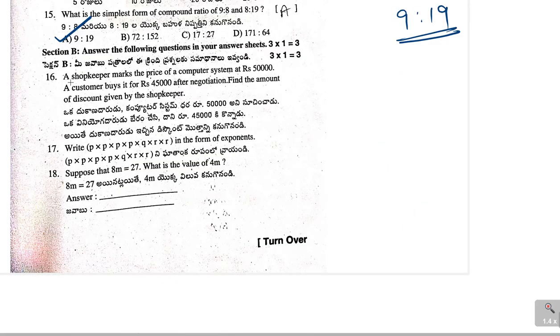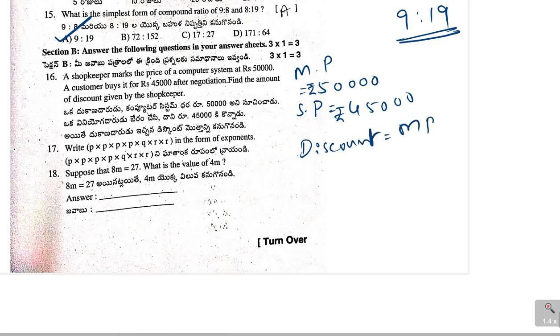Let us go to 16th problem. A shopkeeper marks the price of a computer system at Rs 50,000. A customer buys it for Rs 45,000 after negotiation. Find the amount of discount given by the shopkeeper. Original amount or market price is Rs 50,000. Selling price is Rs 45,000. Then, discount equal to market price minus selling price, which is equal to Rs 50,000 minus Rs 45,000, which is equal to Rs 5,000. Rs 5,000 is the answer.